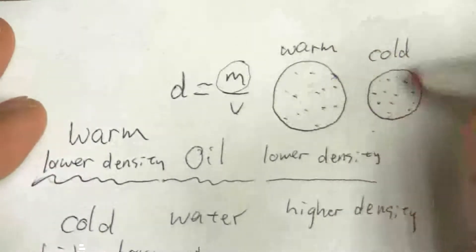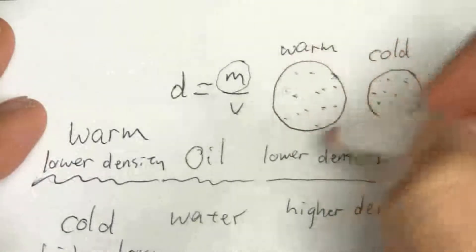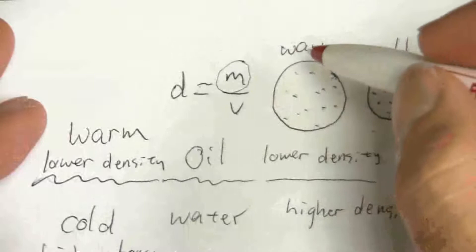It increases the density because I have the same mass, but it's in a smaller volume. Same number of particles, same mass, but it's in a smaller volume than it was when it was warm.